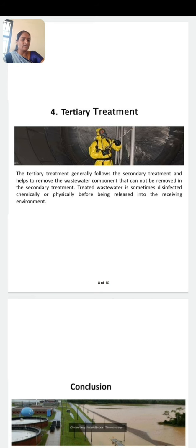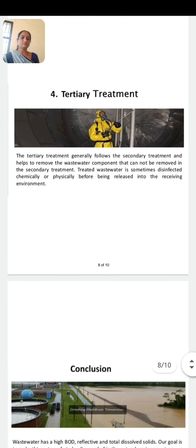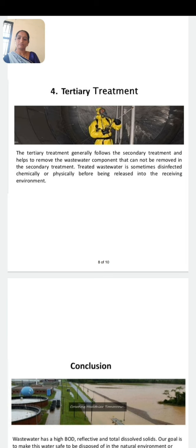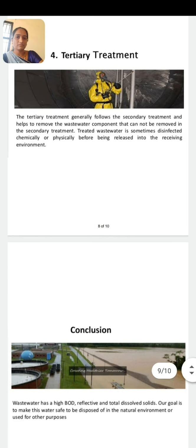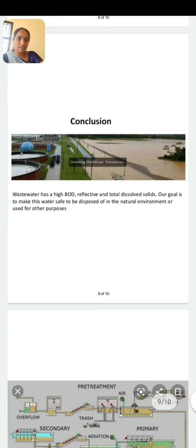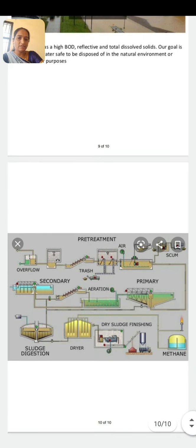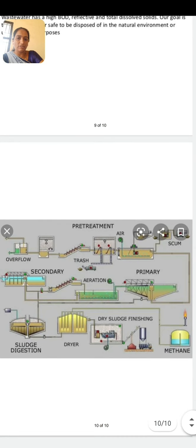After that, chlorination can be done. Chlorination kills the pathogenic bacteria and then the digested sludge is disposed. A flow chart is also provided for the overall sewage treatment process.